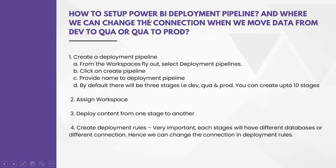The next question: how to set up a Power BI deployment pipeline, and where can we change the connection when we move data from dev to QA or QA to production? To set up a deployment pipeline, go to the workspace layout, select deployment pipelines, click on create pipeline, and provide a name. By default there will be three stages — dev, QA, and production — but you can create up to 10 stages. Then assign workspaces for those deployment pipeline stages and deploy content from one stage to another.